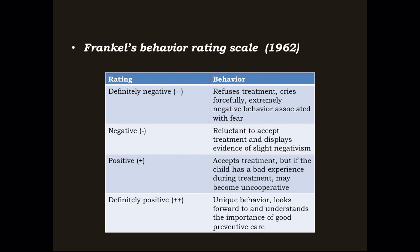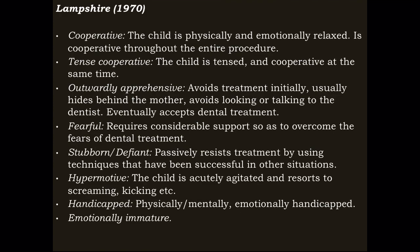Just read through all the classifications and go through the whole video so you have an idea of what kind of questions you can get, and there won't be any need for textbook reading — everything is covered here. Next is Lambshire's classification given in 1970. It includes cooperative, tense cooperative, outwardly apprehensive, fearful, stubborn or defiant, hypermotive, and handicapped.